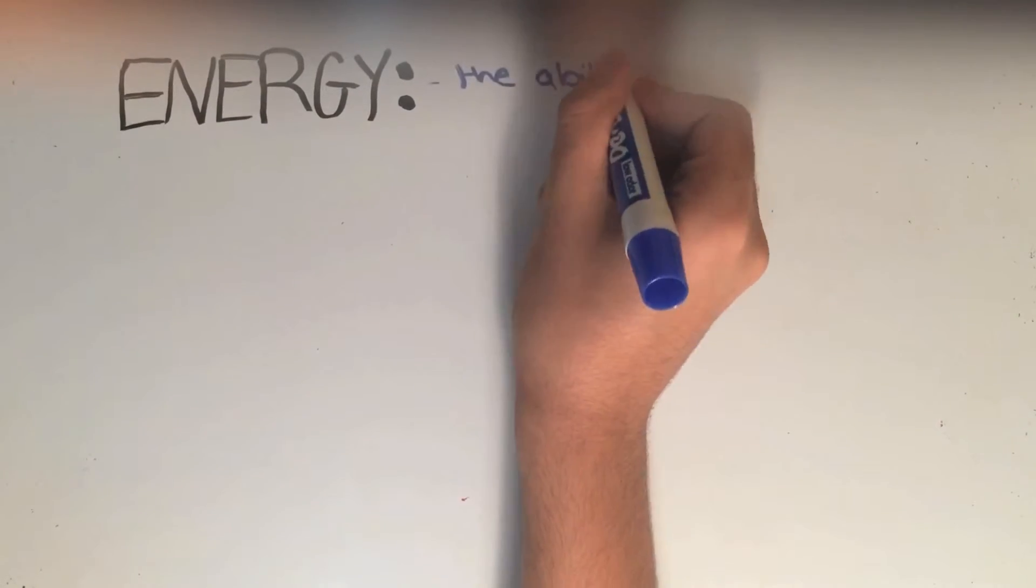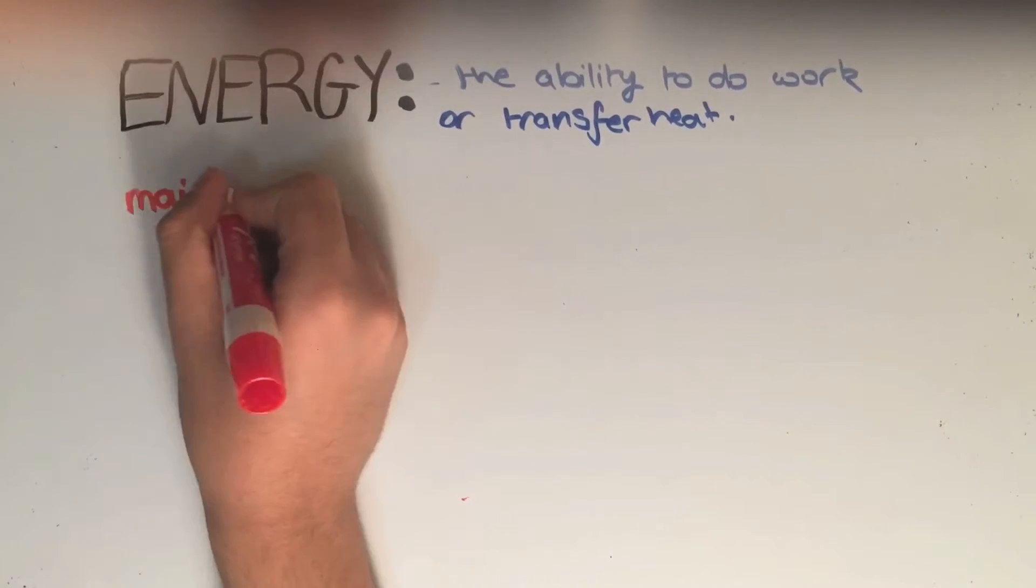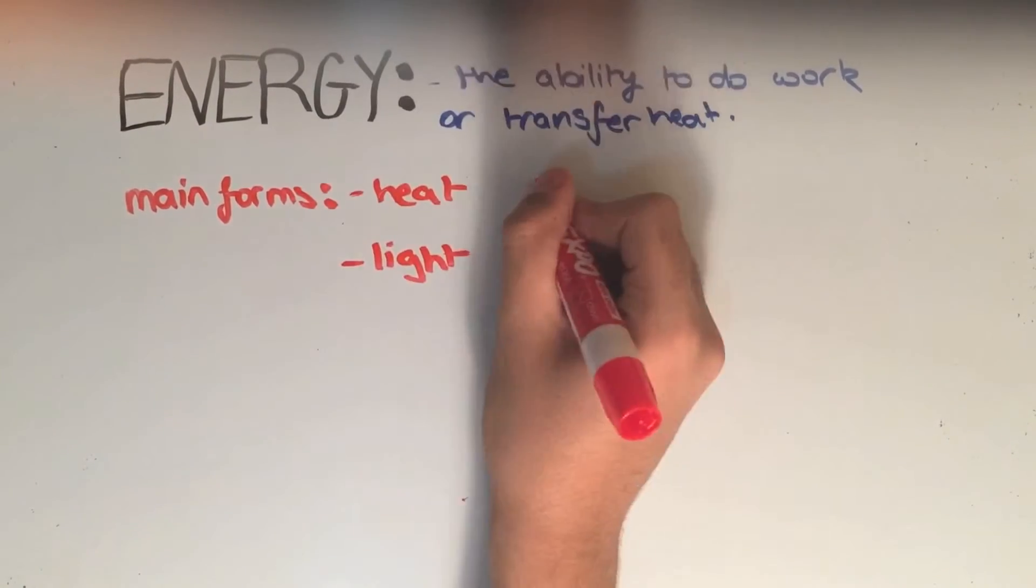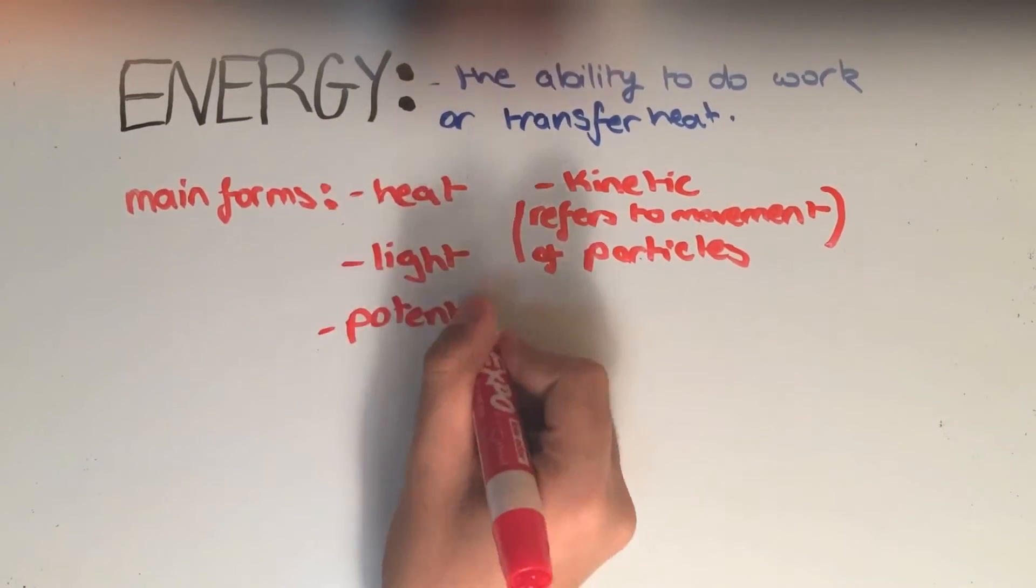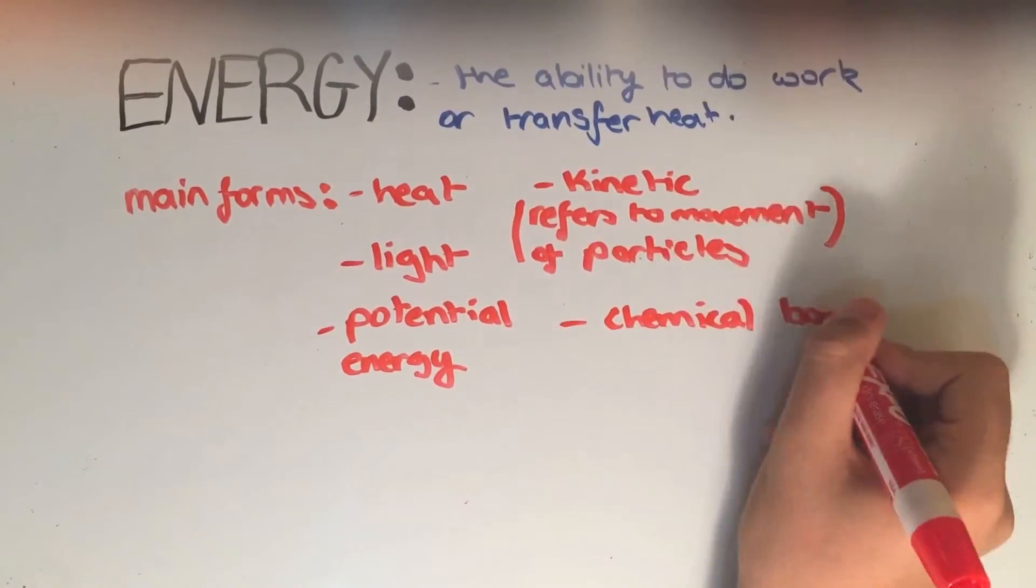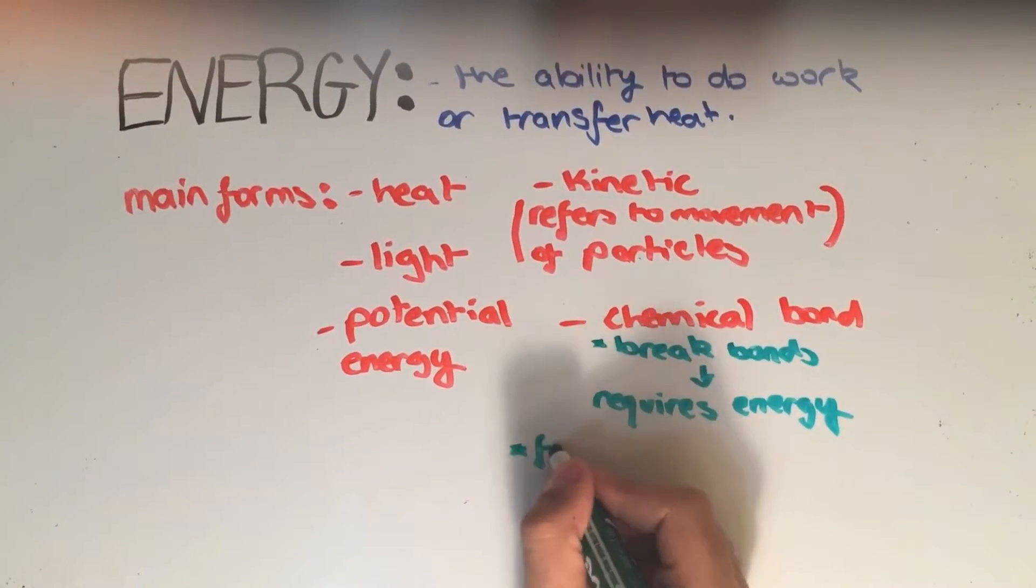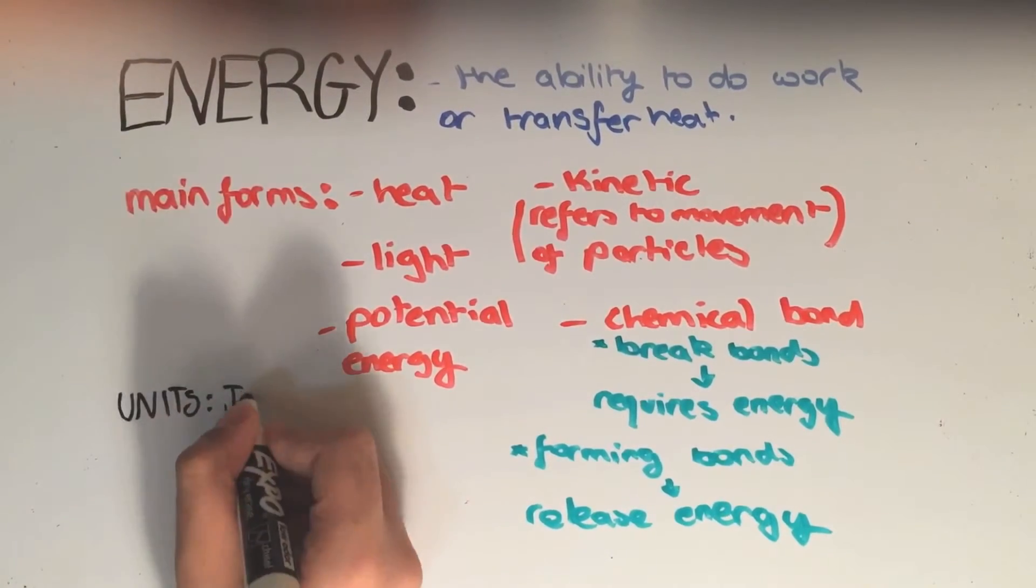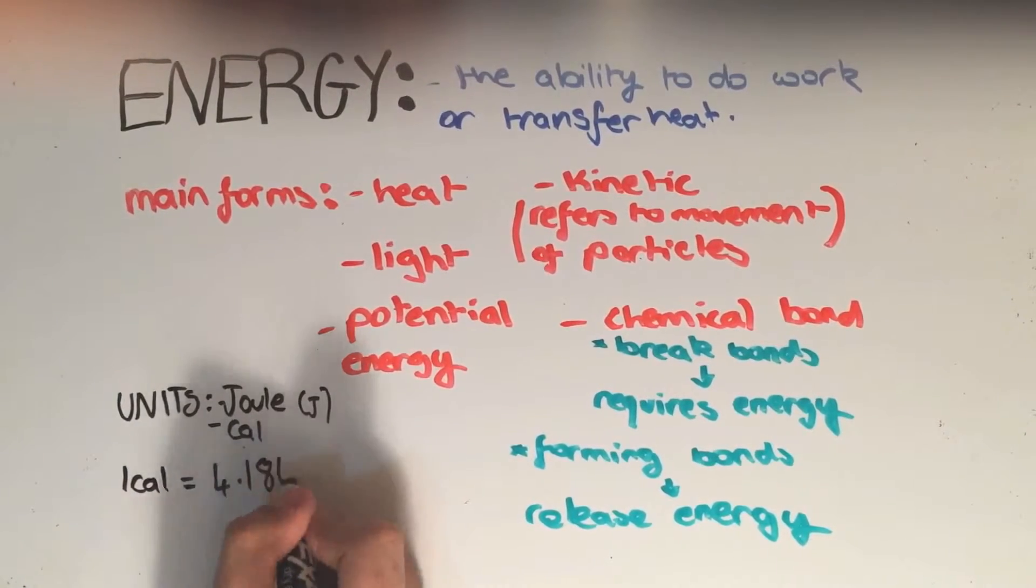Another essential quantity you must know of is energy. Energy is defined as the ability to do work or transfer heat. There are many forms of energy, however the main ones for now are heat, light, kinetic energy which in chemistry refers to the movement of particles, and then there is also potential energy and chemical bond energy. One thing you must remember about chemical bond energy is that breaking bonds requires energy while forming bonds releases energy. The units of energy are joules and calories. 1 calorie equals 4.186 joules.